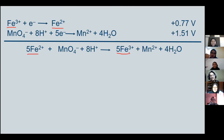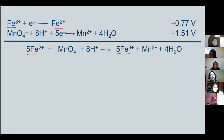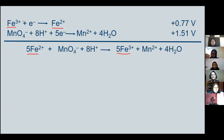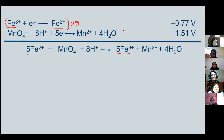To make a balanced chemical equation, we must balance the electron transfer. Permanganate has 5 electrons, while Fe³⁺ has 1 electron. So to cancel both equations, we must multiply Fe²⁺/Fe³⁺ by 5 so the electrons cancel. This means 5 mol of Fe²⁺ reacts with 1 mol of permanganate.